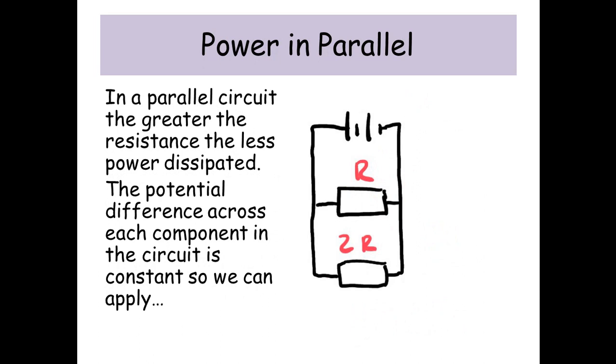Power in parallel: this time, if I put my voltmeter across all these components, the voltage would be the same. The potential difference across the components is the same, so we can apply this formula: P equals V squared over R. In a parallel circuit, the greater the resistance, the less power dissipated relative to the other resistors.